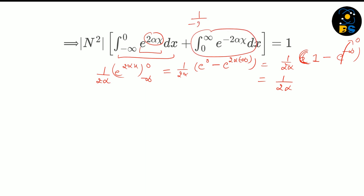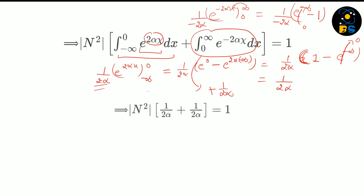Similarly, solving the second integral from zero to infinity, we get 1 over minus 2 alpha times e raised to minus 2 alpha x, evaluated from 0 to infinity. After putting in the limits, e raised to minus infinity vanishes and minus e raised to 0 gives minus 1, so the result is plus 1 over 2 alpha. Adding both integrals: 1 over 2 alpha plus 1 over 2 alpha equals 1 over alpha. Therefore N squared times 1 over alpha equals 1, giving N equal to square root of alpha.